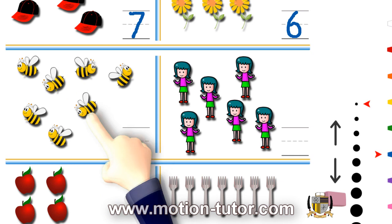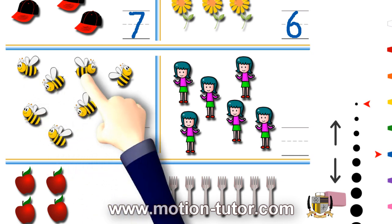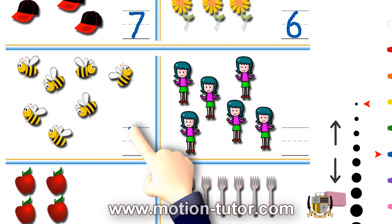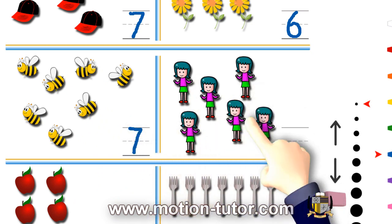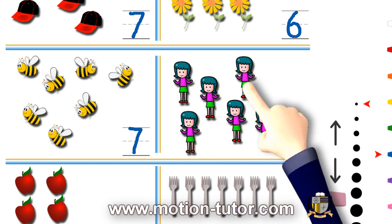What about these bees? 1, 2, 3, 4, 5, 6, 7. And these girls, one, two, three, four, five, six.